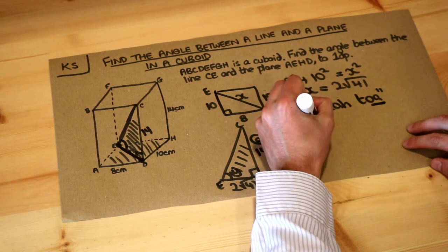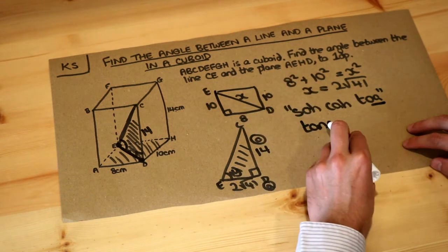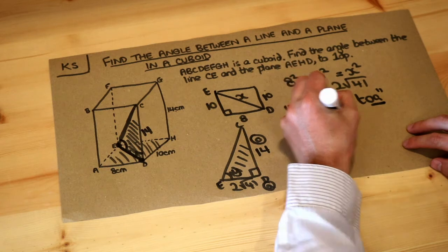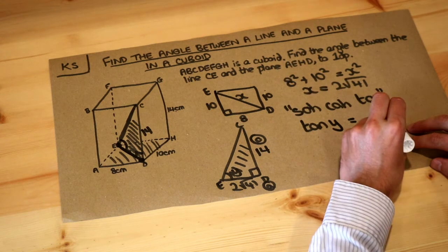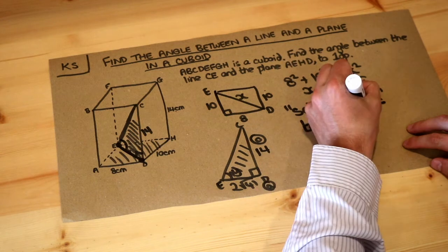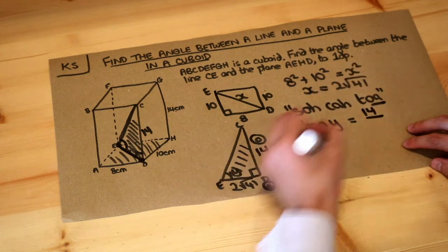So we're going to use tan. And then the way it works is we do tan of the angle, so tan of Y is equal to the opposite over the adjacent. So the opposite is 14 over the adjacent which is 2 root 41.